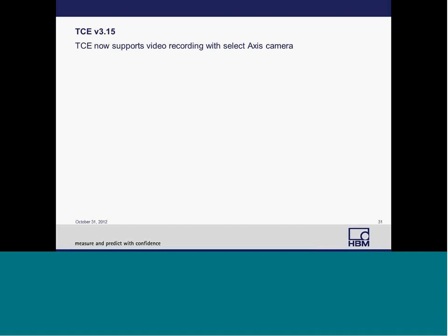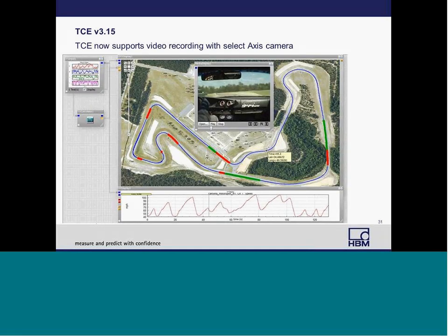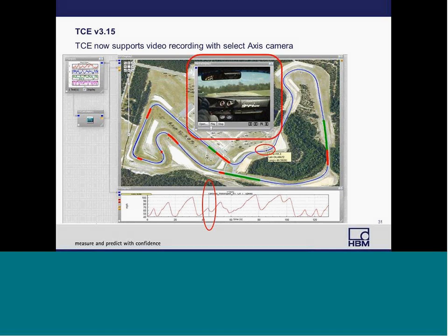On the next slide, I'm going to show an example of how video recording can be used in conjunction with GPS and time history data. The data shown here was processed in HBM's nCode GlyphWorks software. At the bottom of the screen you can see a time history chart, and there's a blue cursor mark on the chart. From that mark, you can get GPS coordinates, and using GlyphWorks you can locate exactly where you are—shown by a circle on the map with a box providing your time, latitude, and longitude. The video above also offers visual visualization of your location at that time.